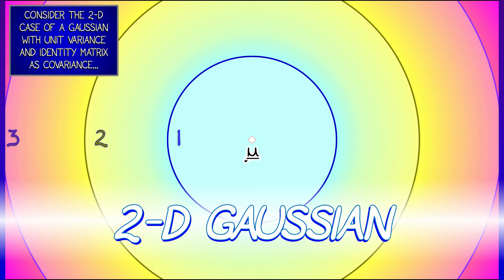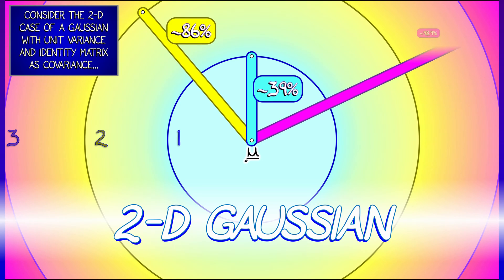In 2D, these are now disks. Nice round disks about the mean. When you check those numbers, you get 39%, 86%, 98.9%.